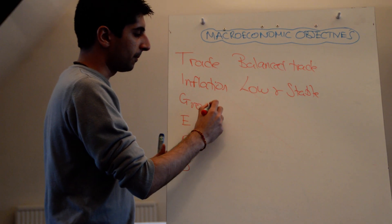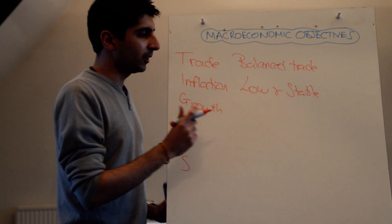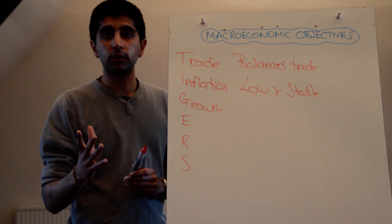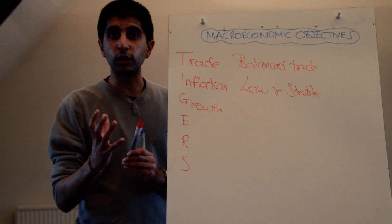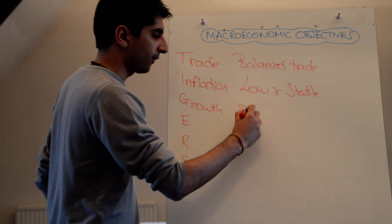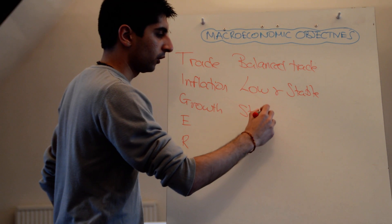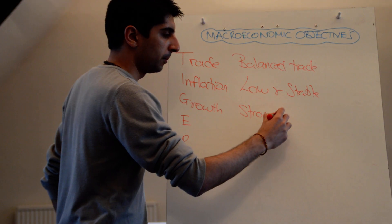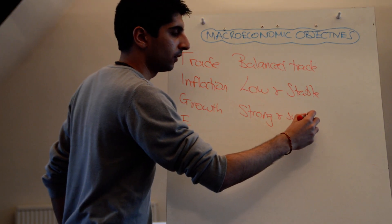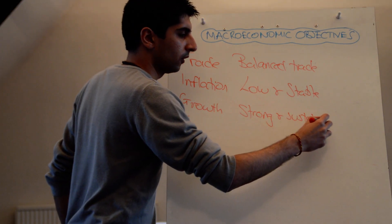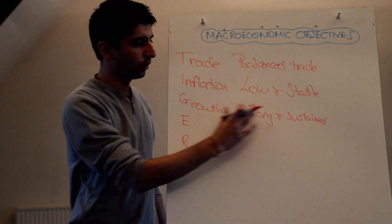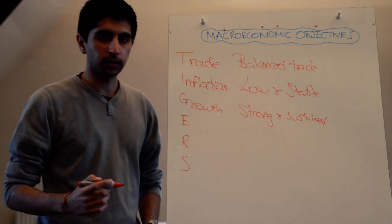G is a fundamental one. A fundamental objective of government is growth — targeting real GDP. And what's the objective here? To have strong growth, but also sustained. Trying to negate the effects of the business cycle. Strong, sustained growth.